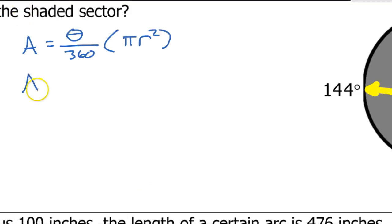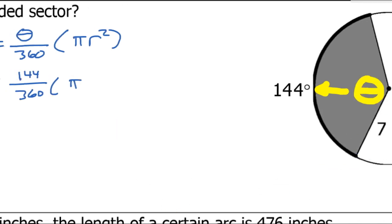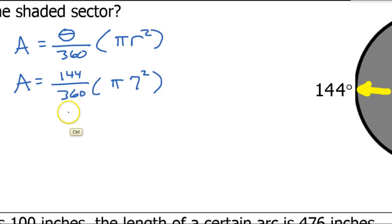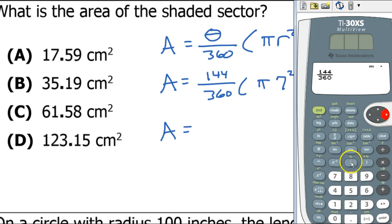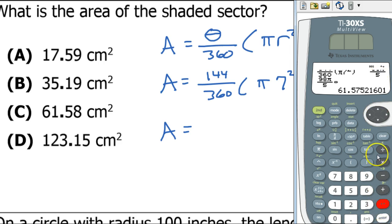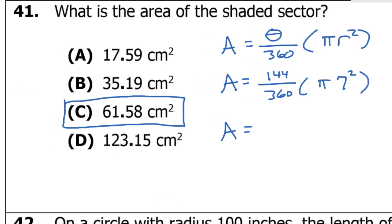Substituting in: sector area equals (144 / 360) times pi times 7 squared. Using a calculator: 144 over 360 times pi times 49 gives approximately 61.58. Rounding up, the answer is C.